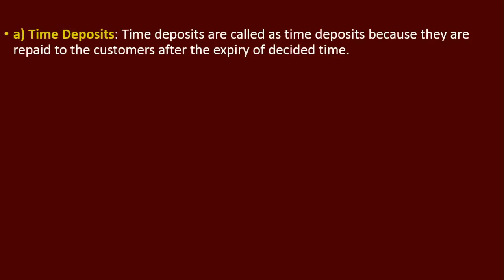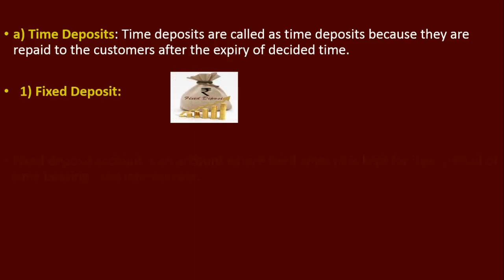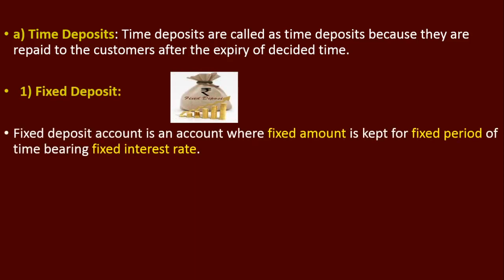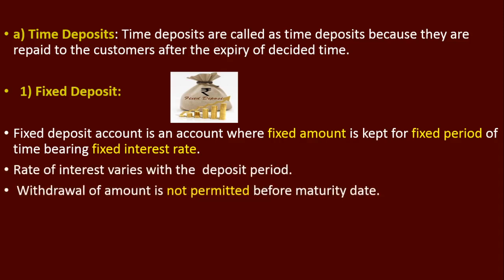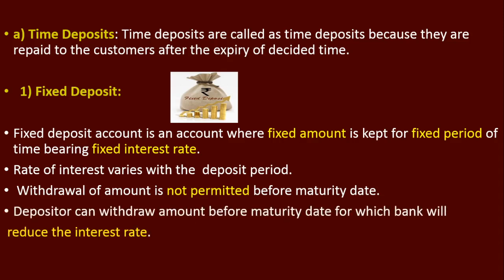Time deposits are called so because they are repaid to the customer after the expiry of a decided time period. Fixed deposit is an account where a fixed amount is kept for a fixed period and the bank bearing is at a fixed interest rate. The interest rate varies with the deposit period, and withdrawal of the amount is not permitted before the maturity date. Depositors can withdraw before maturity, but the bank will reduce the interest rate.